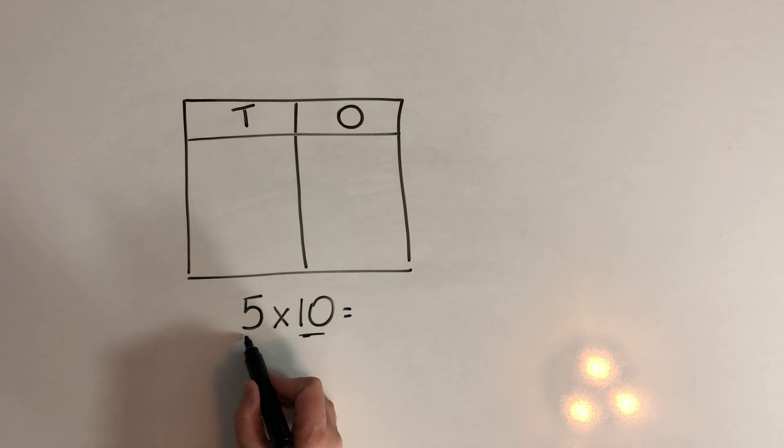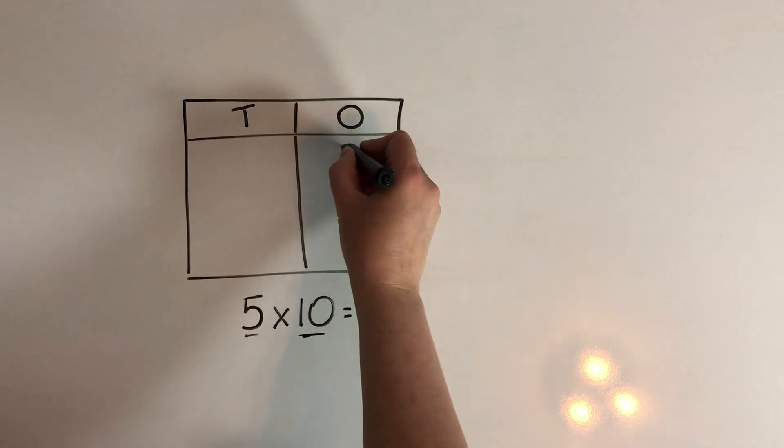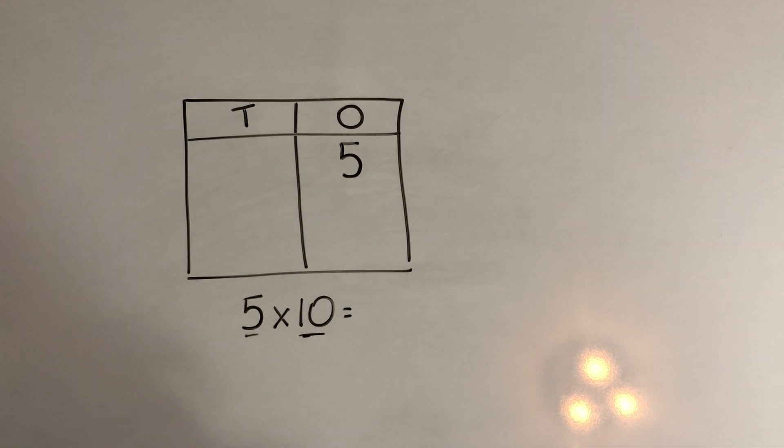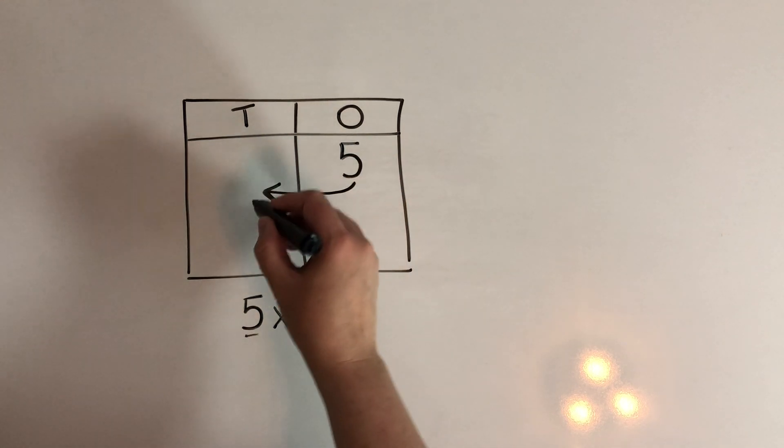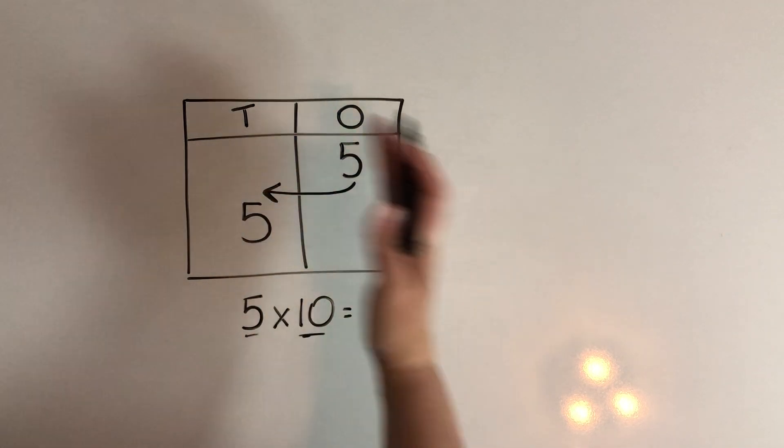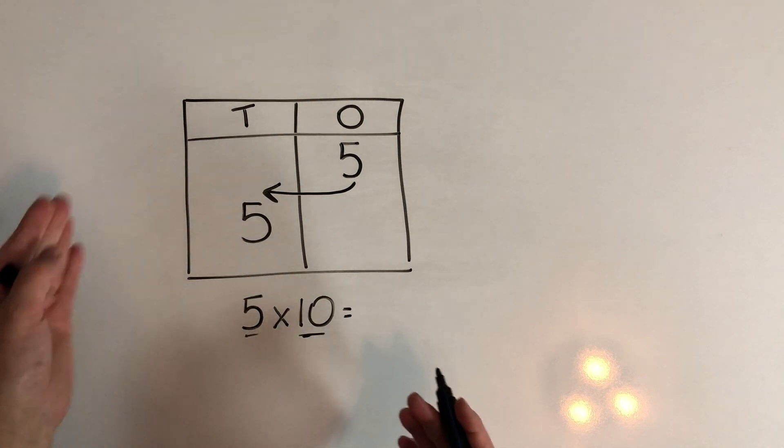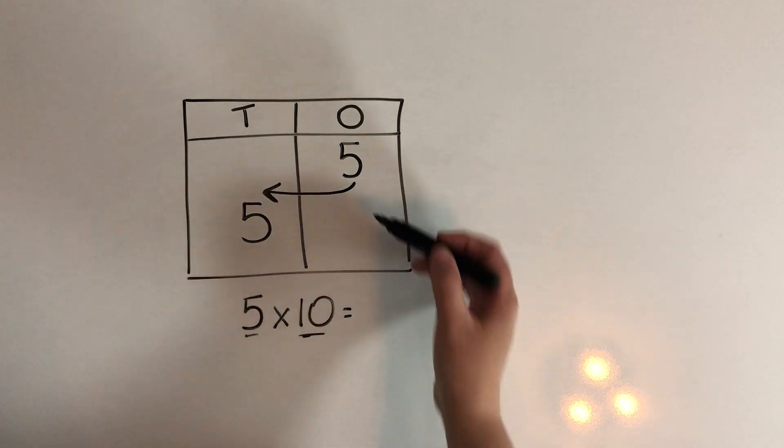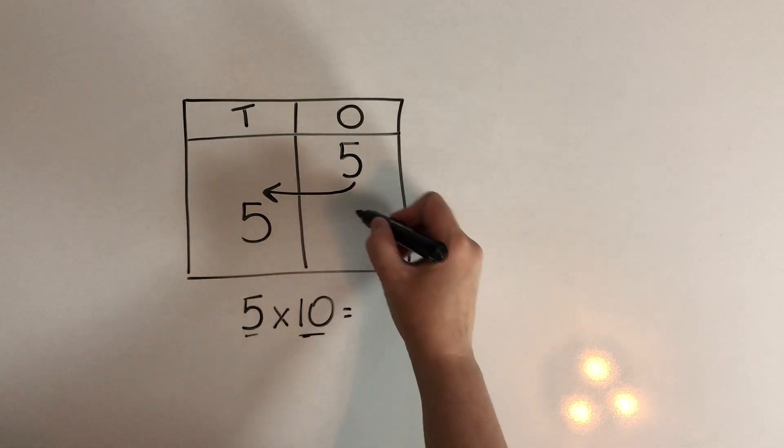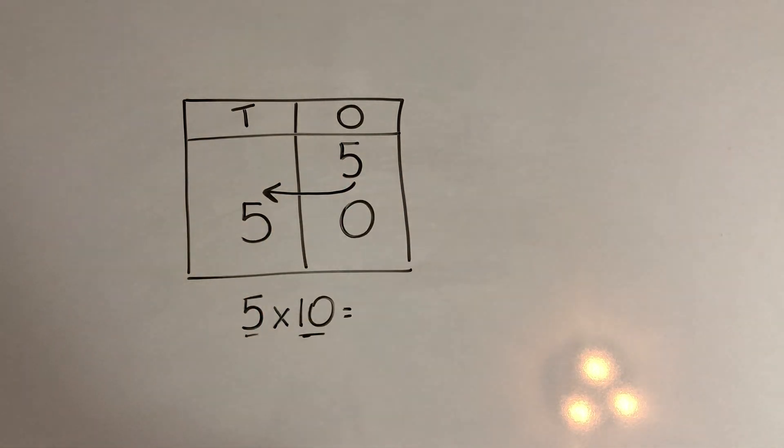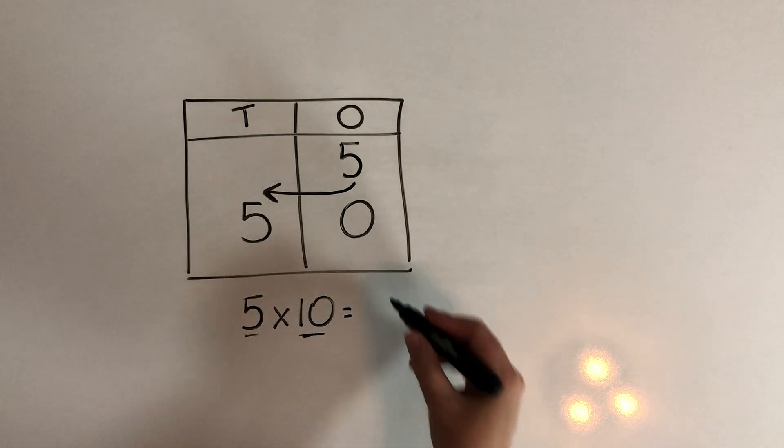We have 5 ones. When we multiply that 5 by 10, we make it 10 times bigger. So the 5 is going to move 1 column to the left. So this 5 is going to move over to the tens place. Now we have an empty space in the 1s so we fill that with a 0. And this gives us 50.